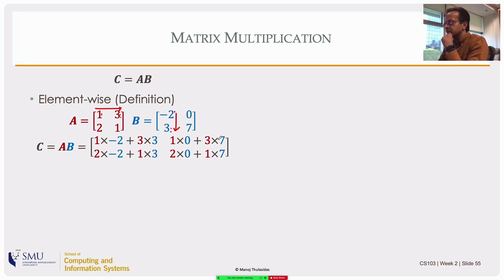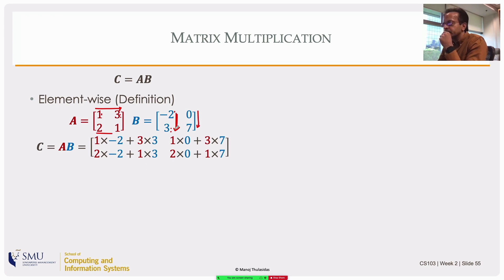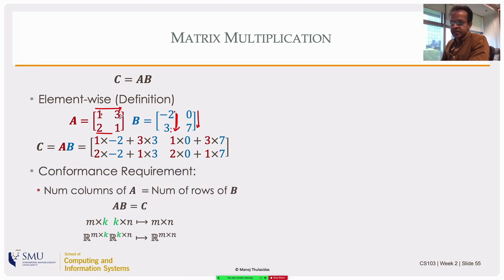To get the first row, second column element, take the first row of A and second column of B and do the same thing. For the second row first element, use the second row of A and first column of B, and so on. The number of columns of A must equal the number of rows of B, otherwise you have too many or too few elements to multiply — that multiplication is not defined. This is called the conformance requirement.